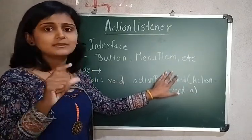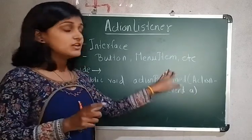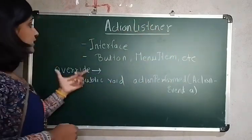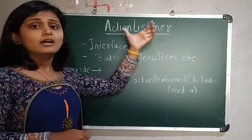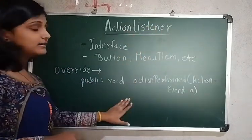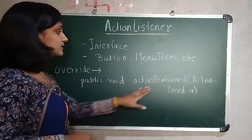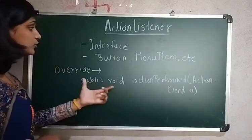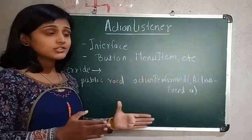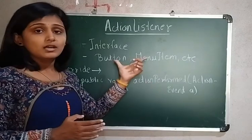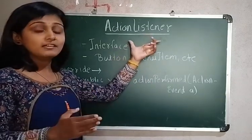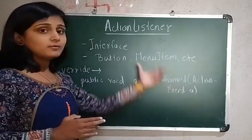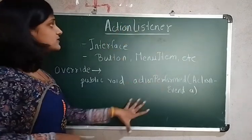Whenever we are going to perform an action on a button or menu item — whenever we click, select something, or have a double click on a text field — we are going to implement this Action Listener. If you are using this Action Listener, you have to override the method: actionPerformed(ActionEvent ae). This is the method you have to use if you want to perform some action on particular controls.